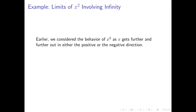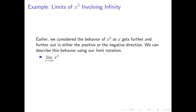Let's summarize all of this by looking at various limits involving infinity applied to the x squared function. We can describe the behavior using our limit notation. The limit as x approaches infinity of x squared is infinity, because as x gets bigger and bigger, x squared gets bigger and bigger as well. The limit as x approaches negative infinity of x squared is also infinity, because as x gets further off in the negative direction, x squared keeps getting bigger in the positive direction. On the graph of y equals x squared, moving left or right, the graph moves further and further up.